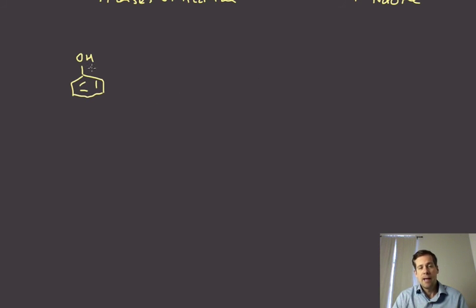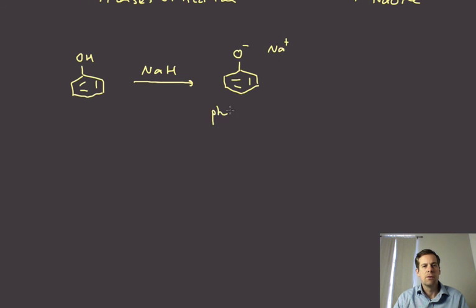We can deprotonate a phenol, for example with sodium hydride or some other strong base. If we do that, we will generate this anion of the phenol, and there's our counter ion. This would be called a phenoxide, so phenol goes to phenoxide, and now this is completely viable as a nucleophile.